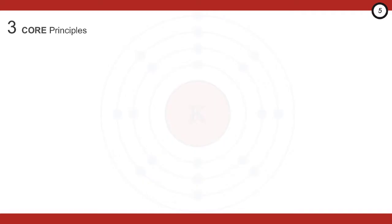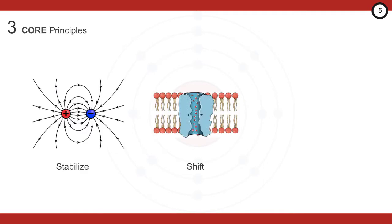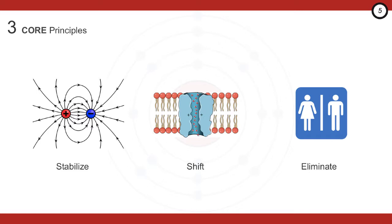It's useful to think about the management in terms of three core principles: stabilization of the cardiac membrane, shifting potassium into the cells, and elimination of potassium. But the real question is, at what potassium value do we need to initiate each one of these treatments? When do we start calcium? When do we start driving that potassium into the cells? And when do we start eliminating it altogether?